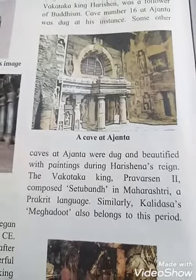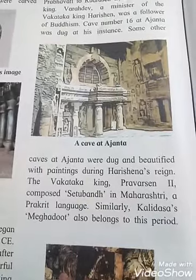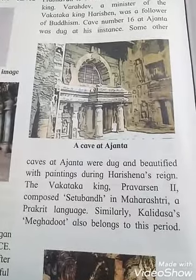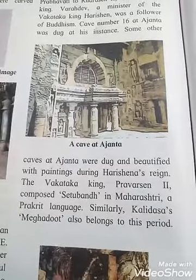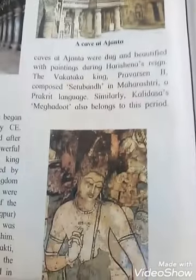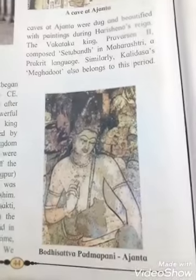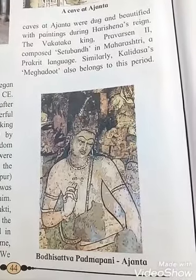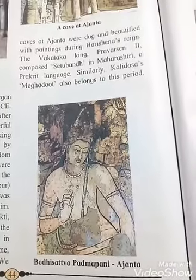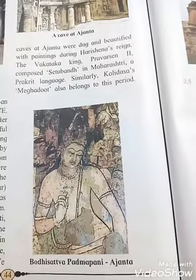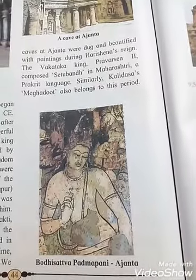Some other caves at Ajanta were dug and beautified with paintings during Harishena's reign. The Vakataka king Pravarasena II composed Setubandha in Maharashtri, a Prakrit language. Similarly, Kalidasa's Meghaduta also belongs to this period. You can see the picture of an Eki-kiva (single-room cave) at Ajanta, and the Bodhisattva Padmapani painting at Ajanta.